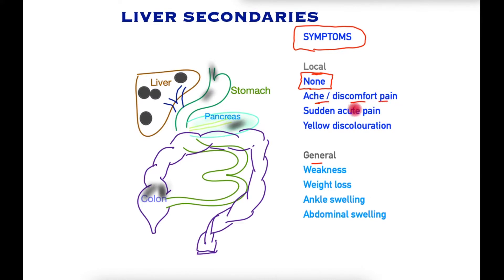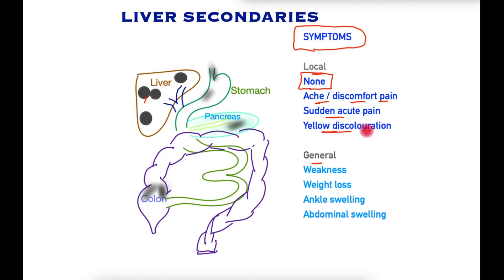Less commonly, sudden acute pain in the right upper quadrant is produced when a metastasis has a bleed inside it, which is quite a rare event. If the metastases obstruct the flow of bile, or if they engulf the liver completely, patients may have yellow discoloration or jaundice, and less commonly liver failure.